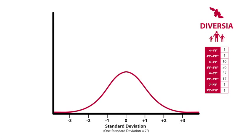For Diversia, there is a high standard deviation, since the data points are spread out over a larger range of values. In this example, one standard deviation is calculated to be plus or minus 7 inches. Once again, the same standard deviation rules apply. 68% of the data collected falls within plus or minus one standard deviation.